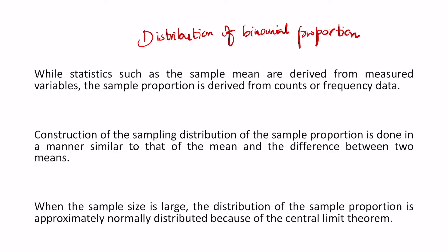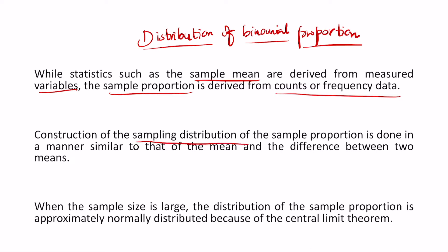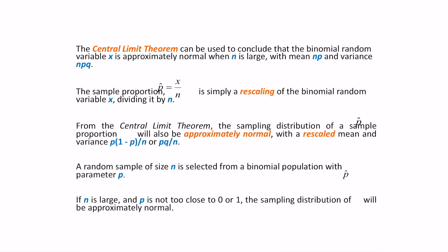Welcome to lecture 2. In this lecture we will start with the distribution of binomial proportion. In statistics, we use sample mean derived from measured variables, while sample proportion is derived from counts of frequency data. The construction of the sampling distribution of a sample proportion is done in a manner similar to the mean and difference of two means. When the sample size is large, the distribution of the sample proportion is approximately normal due to the central limit theorem. The proportion p-hat is written as x divided by n — this is basically a rescaling value.